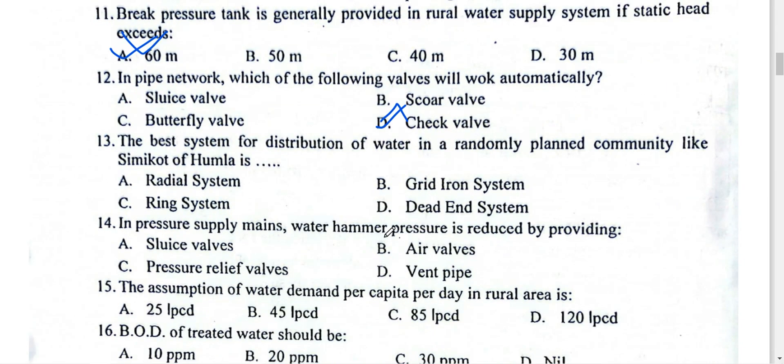The best system for distribution of water in a rural water supply is the dead-end system (same-end system). Other systems include the radial system, ring system, and grid (Parisian) system.